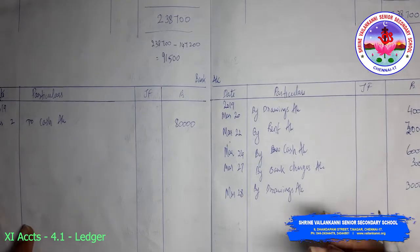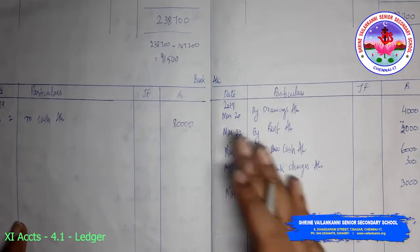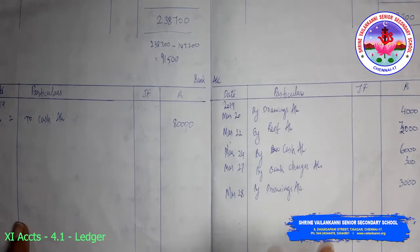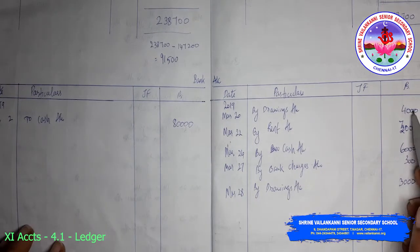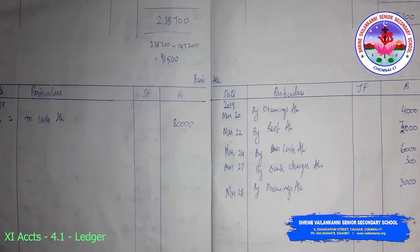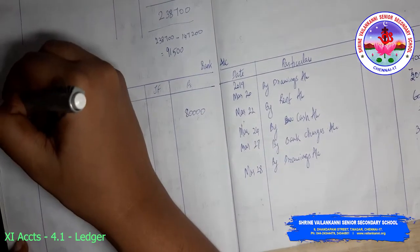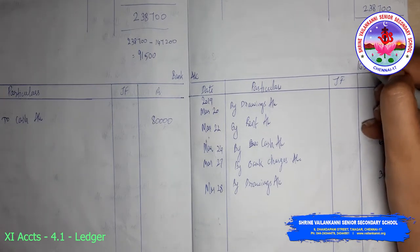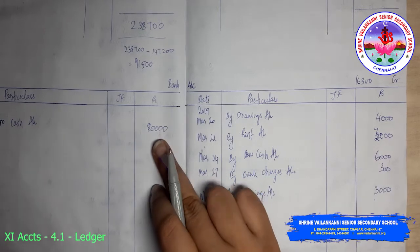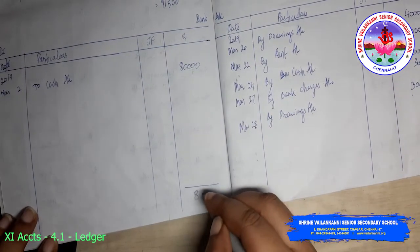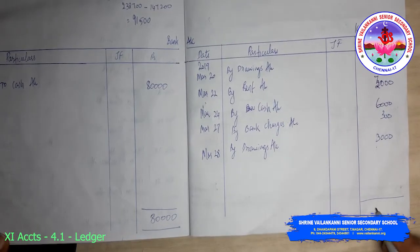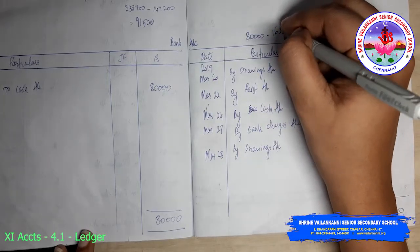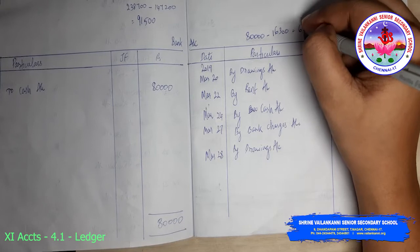Similarly, cash transaction would have been completed. Now we need to balance these transactions. I am just going to cut short — I will just show you how to balance two accounts and then balance all the other accounts. 80,000 is here; you have 16,300 on the credit side. The debit side total is 80,000, the credit side total is 16,300. Since 80,000 is higher, I will write it as 80,000. We need to equalize this: 80,000 minus 16,300 equals 63,700.